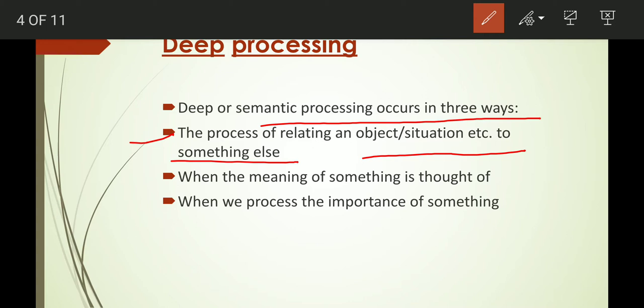The second way of deep processing is when the meaning of something is understood. When you truly understand a topic's meaning, your brain forms a clear understanding of it. Some topics you may not understand at all, but others become very clear because you grasp their meaning — that is deep processing through understanding.